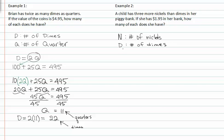It says that she has three more nickels than dimes, so n, or nickels, equals dimes plus three. Because it says that she has three more nickels than dimes, if she has more nickels than dimes we have to add three to d to make it equal n.